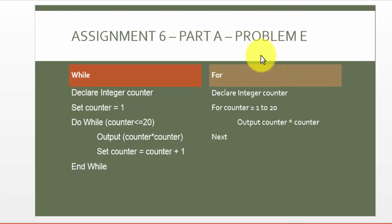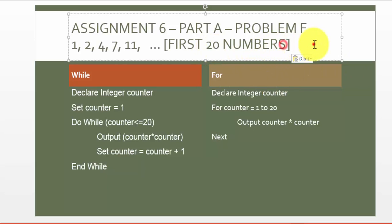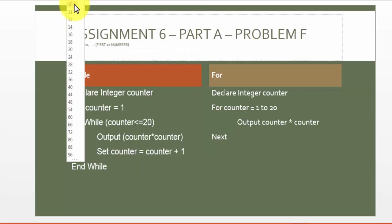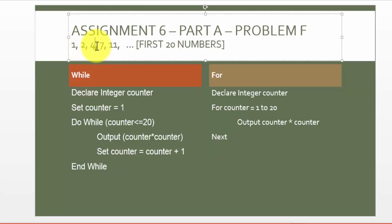Part F could be a little tricky. The sequence I gave you is 1, 2, 4, 7, 11. If you notice, there is a sequential difference between each of these terms. The difference between the first two numbers is 1, the next two is 2, the next two is 3, the next two is 4. So it is the difference of the numbers in sequence — that's pretty much what it is.